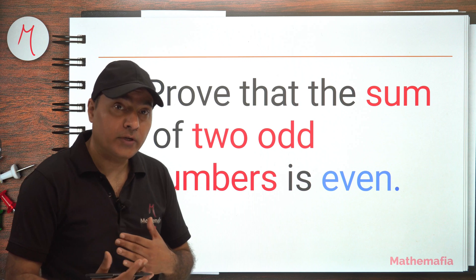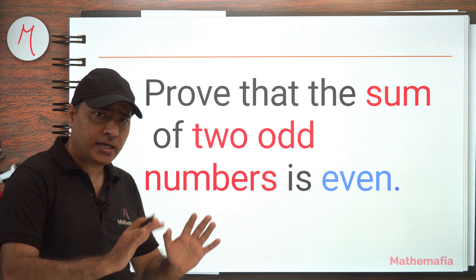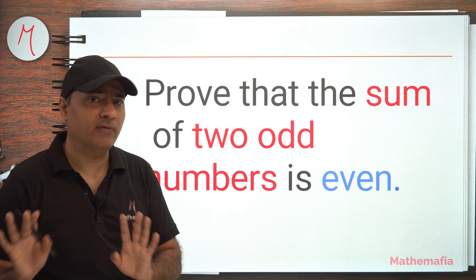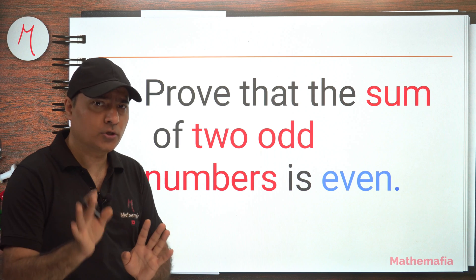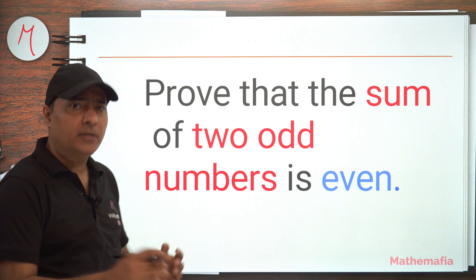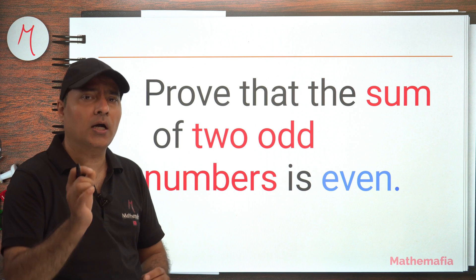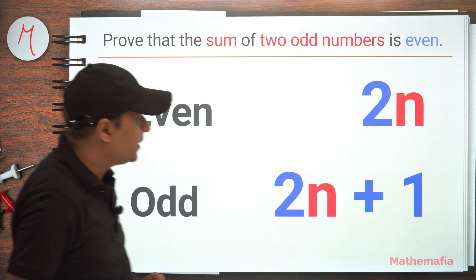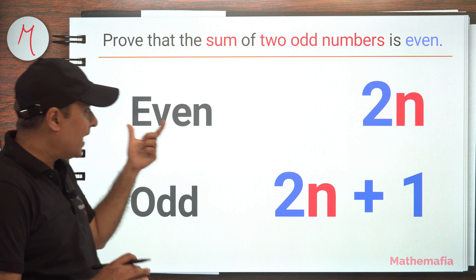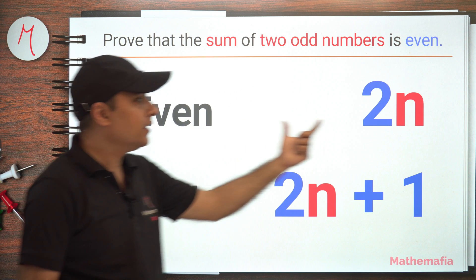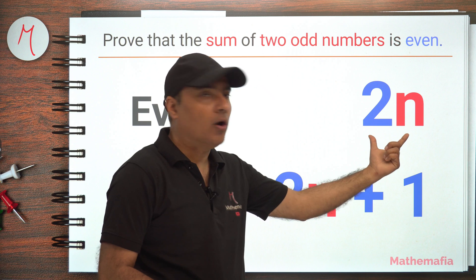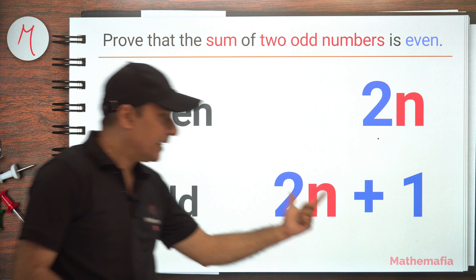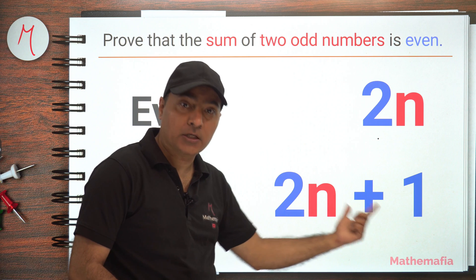How will we prove it? Let's understand a couple of things first and then we will prove it. It's hardly a four to five line proof, so it's not a very complicated thing, but we need to go through a couple of very simple concepts. The first one is: we know that every even number can be written in the form 2n, and every odd number can be written in the form 2n plus one.